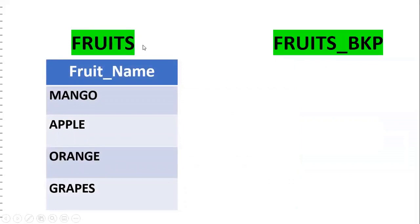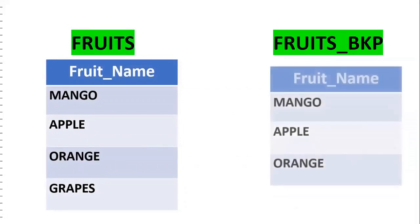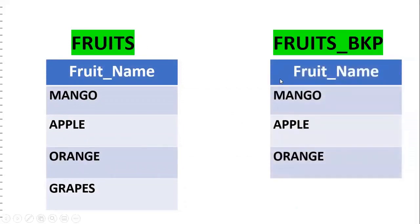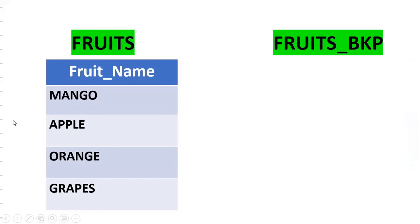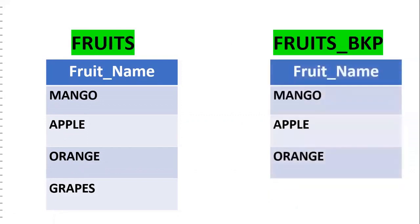My requirement is: this is the fruits table. I want to create a fruits backup table with the same definition and the same data except grapes. I want to create a backup table, fruits_backup, with the same data and the same definition - same fruit_name column - but excluding grapes. In order to create a backup table, I will use the CTAS concept.